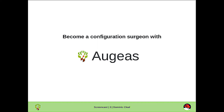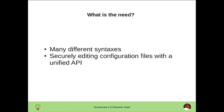Instead, the Augeas library and tools can help you modify and parse files safely. It's a library that supports many different config file syntaxes, from simple files all the way to complex ones, such as auto-mounter files. It has an API that's consistent across many languages, and a command line tool that exposes the same.